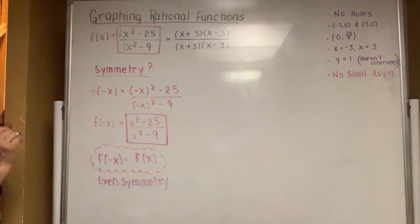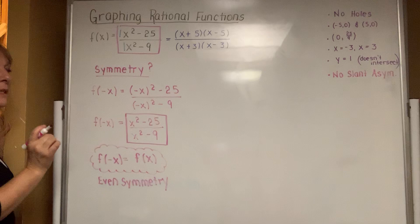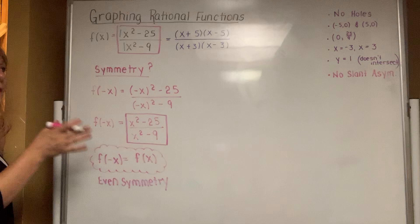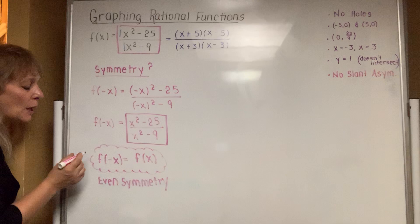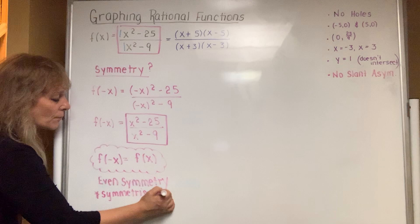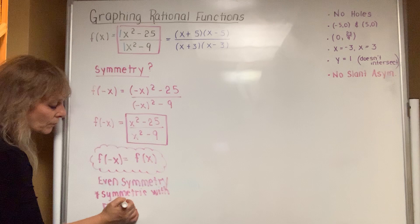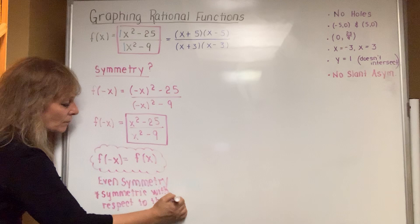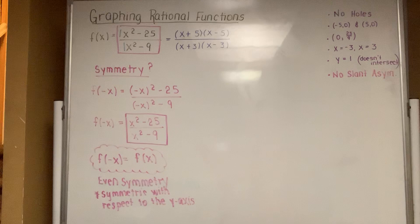When f of negative x equals f of x, your graph has even symmetry. Even symmetry means the graph is symmetric with respect to the y-axis — you can fold it over the y-axis and it folds right on top of itself. It's like a butterfly: what's on the left side has a mirror image on the right side. Mathematically, we write that it is symmetric about the y-axis.